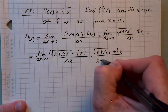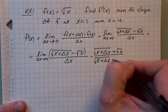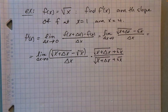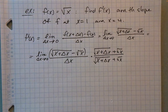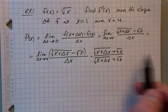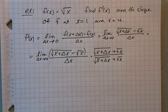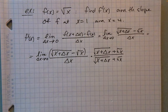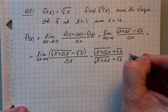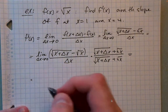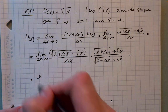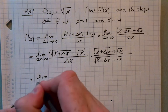We can do that because this factor we're multiplying by is equal to 1 — it's a ratio of the same thing over itself. When we do this, our denominator no longer has the same problems.